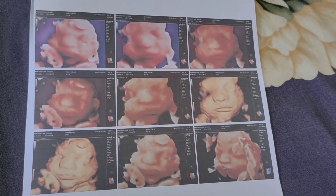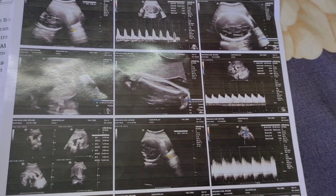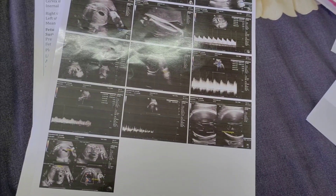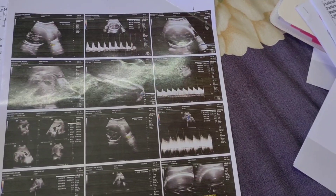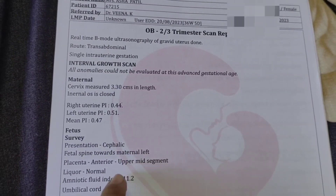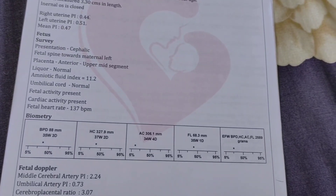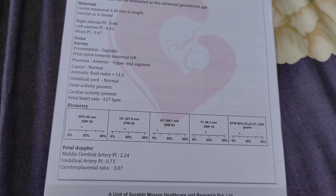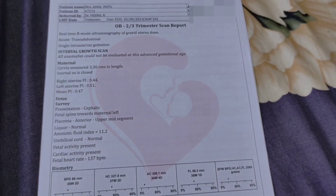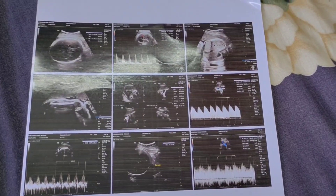We have the baby's 3D scanning. We have a 3D scanning of the baby in the correct position. Next, we are looking at a growth scan. This is a cephalic presentation. The fetal spine is towards the maternal left. Heartbeat is approximately 137 bpm. The baby weight is 2589 grams — almost 2.6 kg. This is the last scanning report at about 37 weeks.